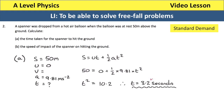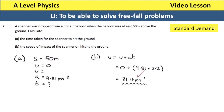Now we work out the speed of impact on hitting the ground. We now also know that the time is 3.2 seconds. Using V equals U plus AT, we do 9.81 times 3.2 to get an answer of 31.4 metres per second.